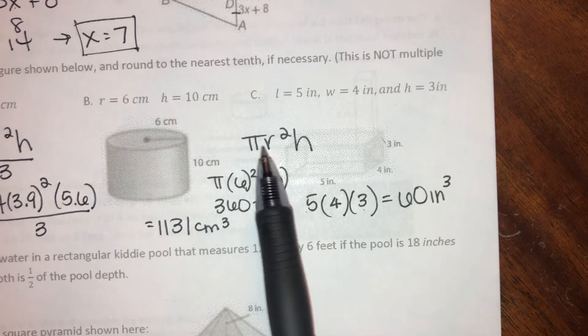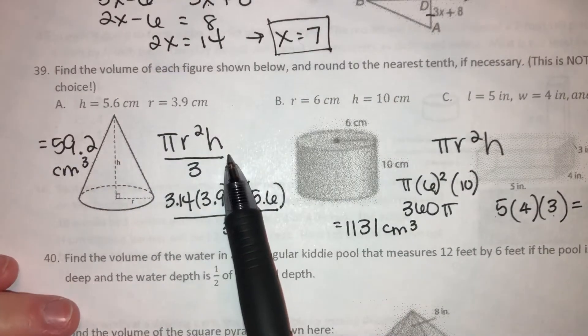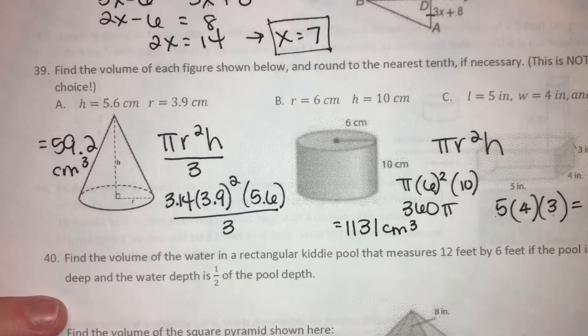All right? So for volume of a rectangular prism, length times width times height. Volume of a cylinder, pi r squared h. And volume of a cone, pi r squared h, divided by 3.